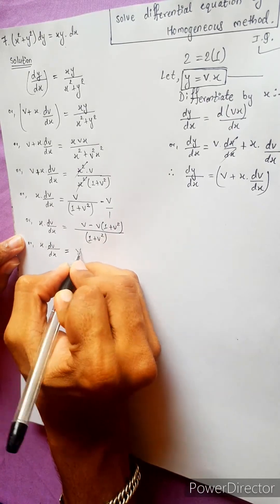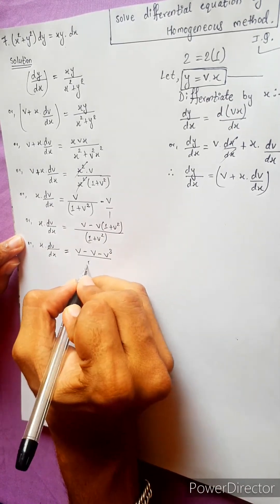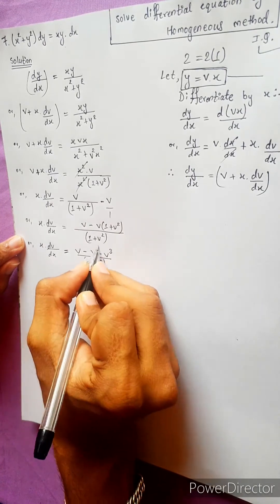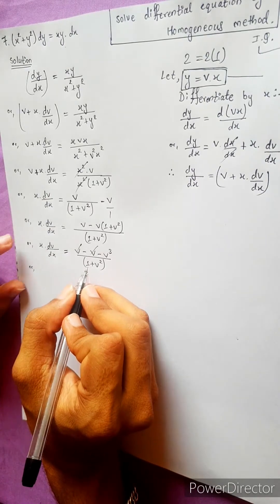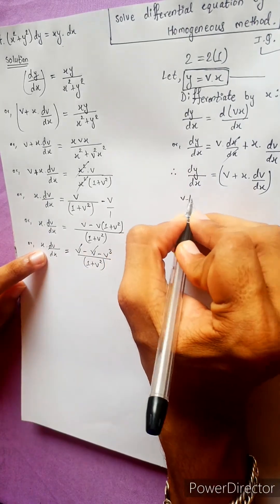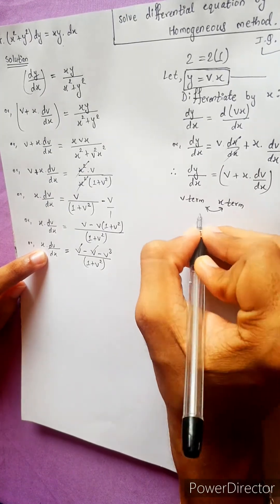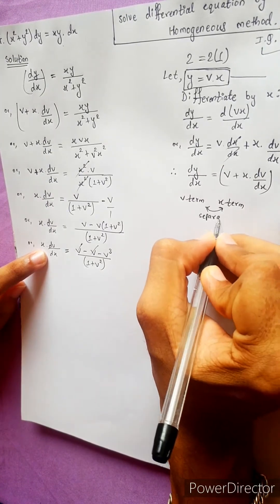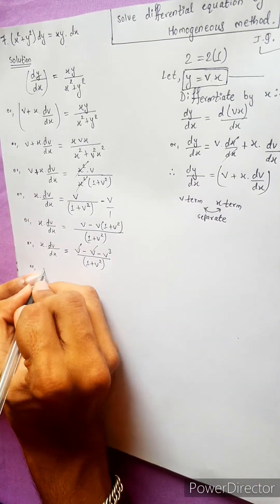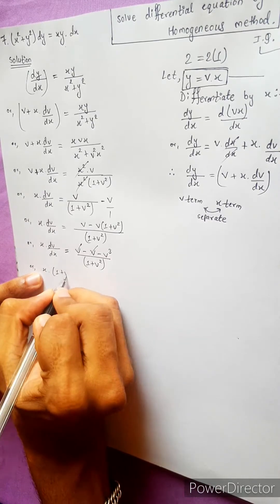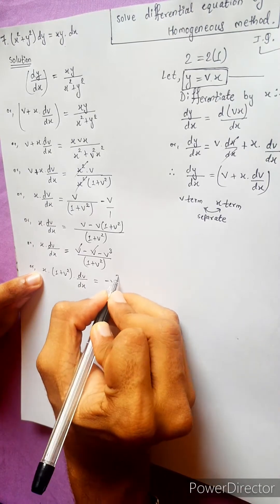equals to v minus v minus v cubed divided by one plus v squared. This v or v cancel. Separate. 1 plus v squared. dv/dx equals to minus v cubed.